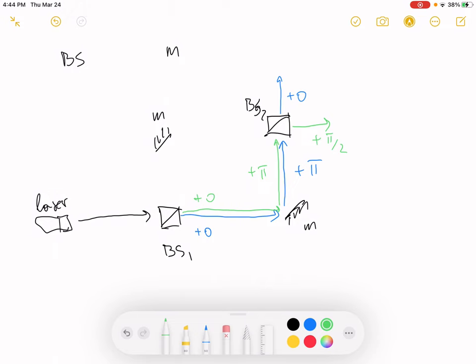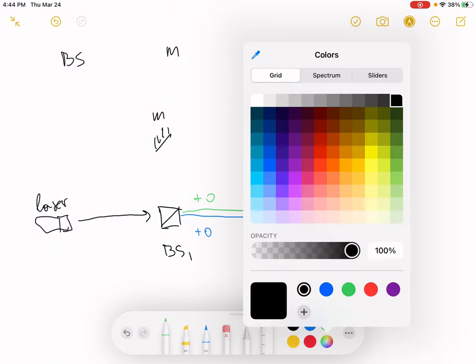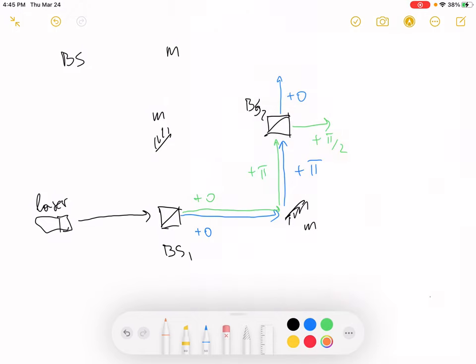Third path. I'll use some orange color. Third path is we reflect from the first beam splitter. Plus pi over two phase. Reflect off the mirror. Plus pi phase. And go through beam splitter number two. Plus zero.